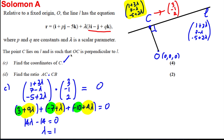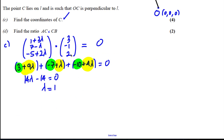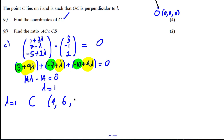Collecting like terms: 9λ plus λ plus 4λ gives 14λ. For the constants: 3 minus 7 minus 10 gives negative 14. So 14λ minus 14 equals zero, which gives λ equals 1. Substituting λ equals 1 into the equation of the line: 1 plus 3 is 4; 7 take away 1 is 6; negative 5 plus 2 is negative 3. Therefore point C has coordinates (4, 6, negative 3).